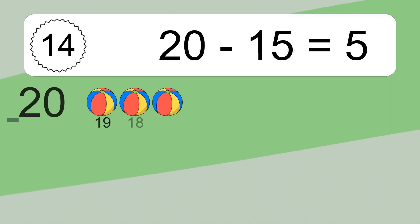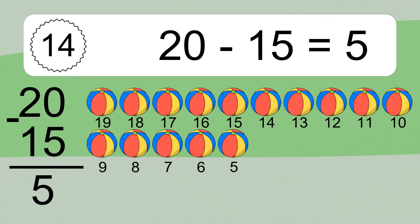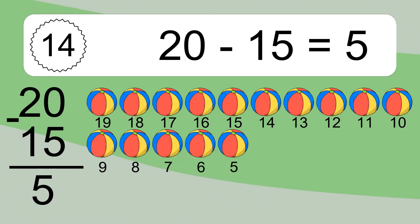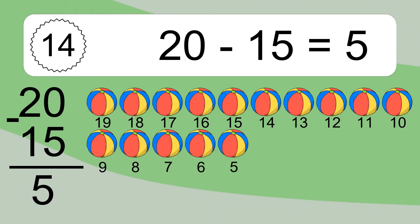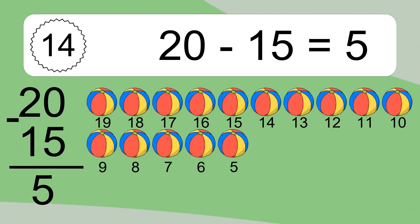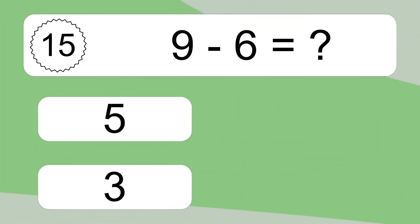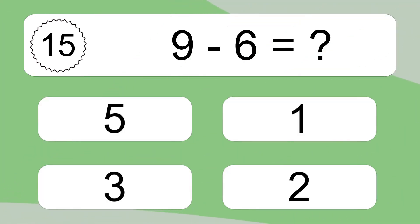20 minus 15 equals what? 20 minus 15 equals 5. Let's count it: 19, 18, 17, 16, 15, 14, 13, 12, 11, 10, 9, 8, 7, 6, 5.